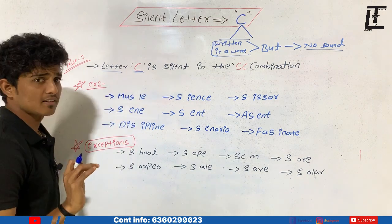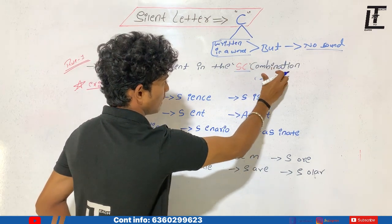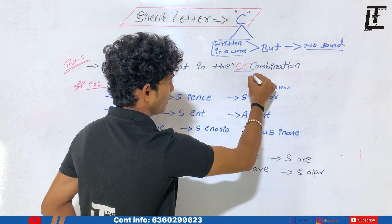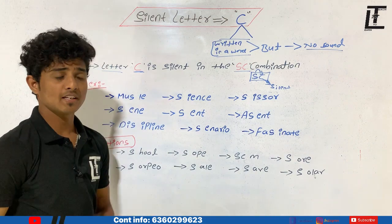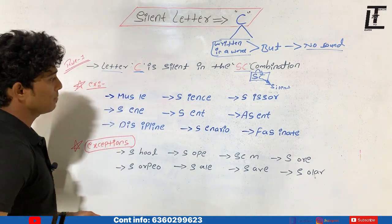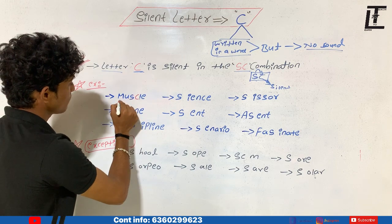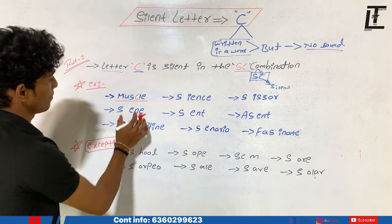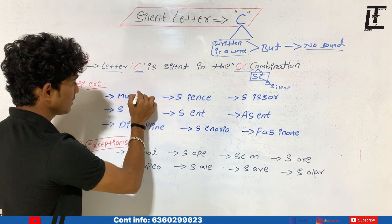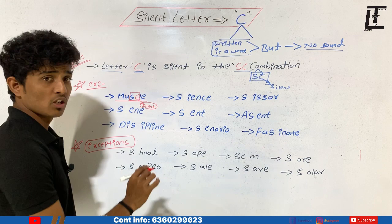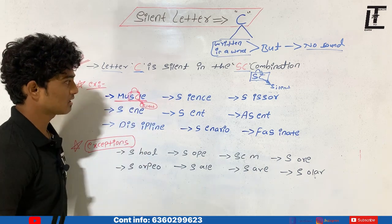The first rule of silent letter C says: letter C is silent in the SC combination. Whenever C comes after the S, or in the SC combination, letter C is considered a silent letter. For example, the word 'muscle' — we have the SC combination here, and there is no sound of the letter C. We pronounce it as 'muscle'. C is silent here because it is in the SC combination.